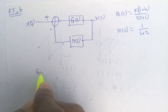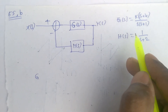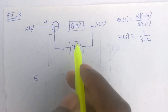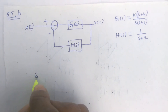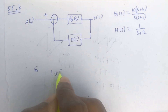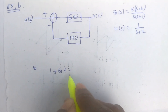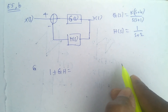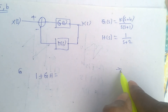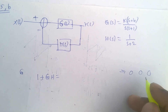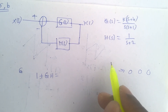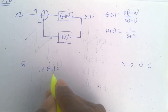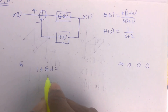The open loop gain G(s) = k(s+4) / [s(s+1)] and the feedback H(s) = 1/(s+2). Since it is a negative feedback system, the characteristic equation becomes 1 + GH = 0. We need to find the characteristic equation because at marginal stability the Routh-Hurwitz criteria has a row which contains all elements as zero.